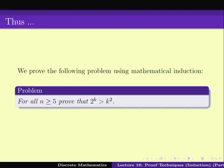With this we come to the end of this video lecture. We have proved that for n ≥ 5, 2^n is greater than n², using the new version of mathematical induction. In the next video lecture we will be looking at some more versions of mathematical induction. Thank you.